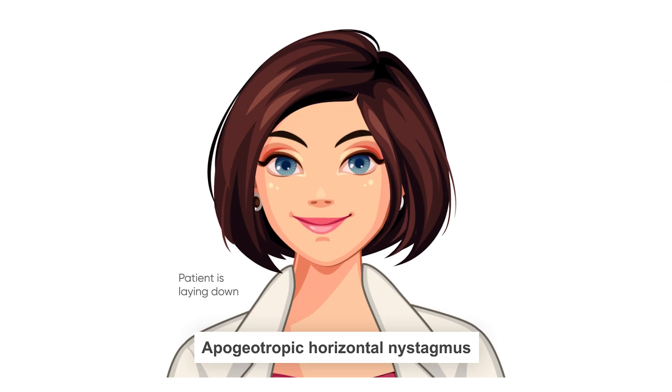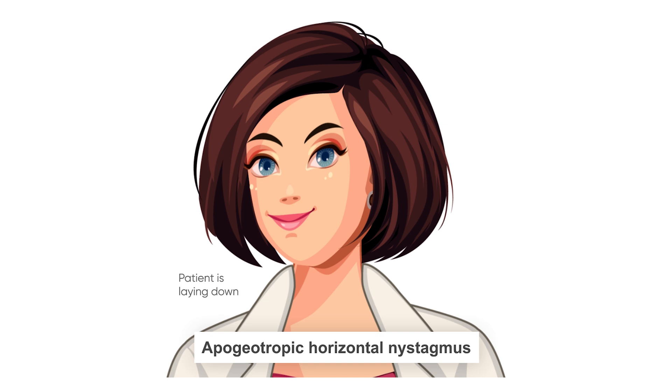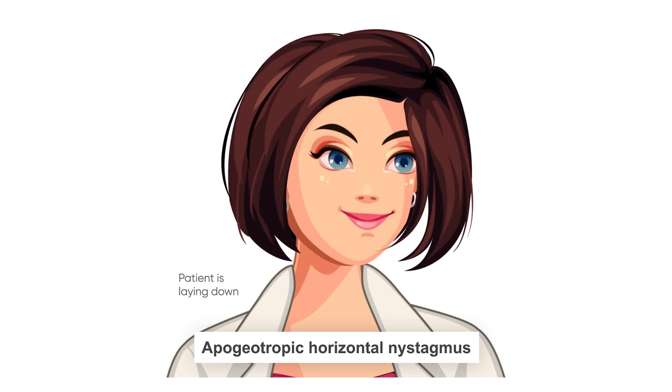We performed the supine head roll test, and after testing both sides we triggered symptoms on the right. Not only did we trigger symptoms on the right, but we also saw a nystagmus that was upbeating, or apogeotropic. When you have an apogeotropic nystagmus with the supine head roll test, you can use the modified Gufoni maneuver.